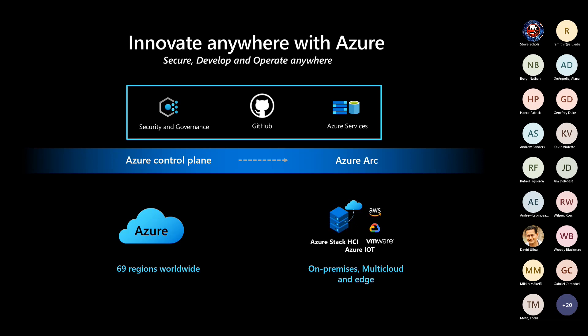Arc is an agent-based approach to go onto your environments — whether that's on-prem, on VMware, in AWS, or on an Azure Stack HCI platform — and bring all those Azure control plane capabilities down to on-prem. From a security and governance perspective, you can apply policies and all the capabilities inherent with the public Azure cloud, and now get them on-prem as well.